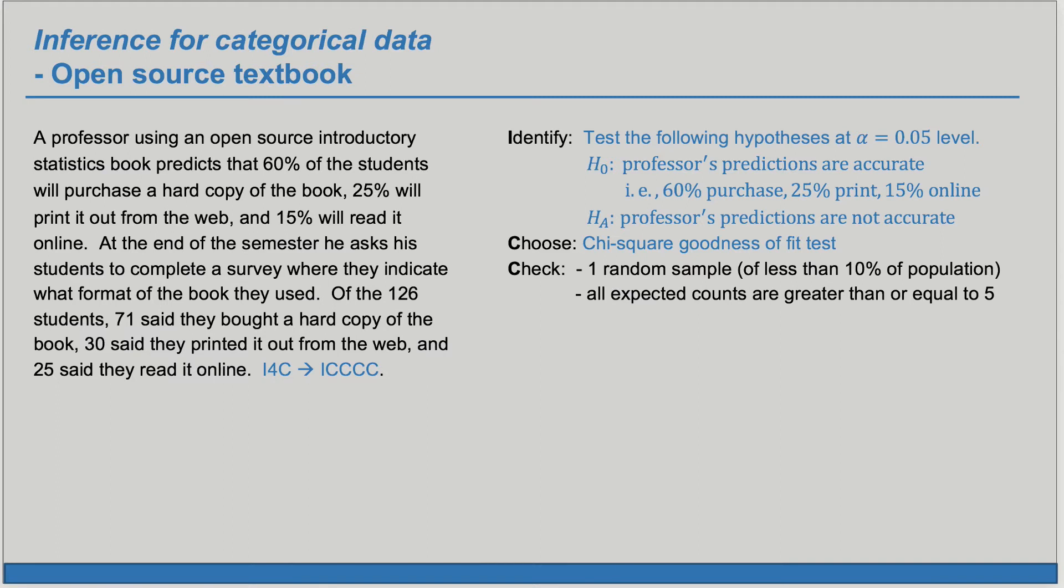The first one is we have one random sample of less than 10% of the population. Here we do not have a random sample as the professor surveyed his students so we'll have to treat that sample as if it were a random sample of a larger population of students. And note that our results will be impacted by that assumption. Next we're interested in looking at the expected counts. We need all of them to be greater than or equal to 5. So we have to calculate them.